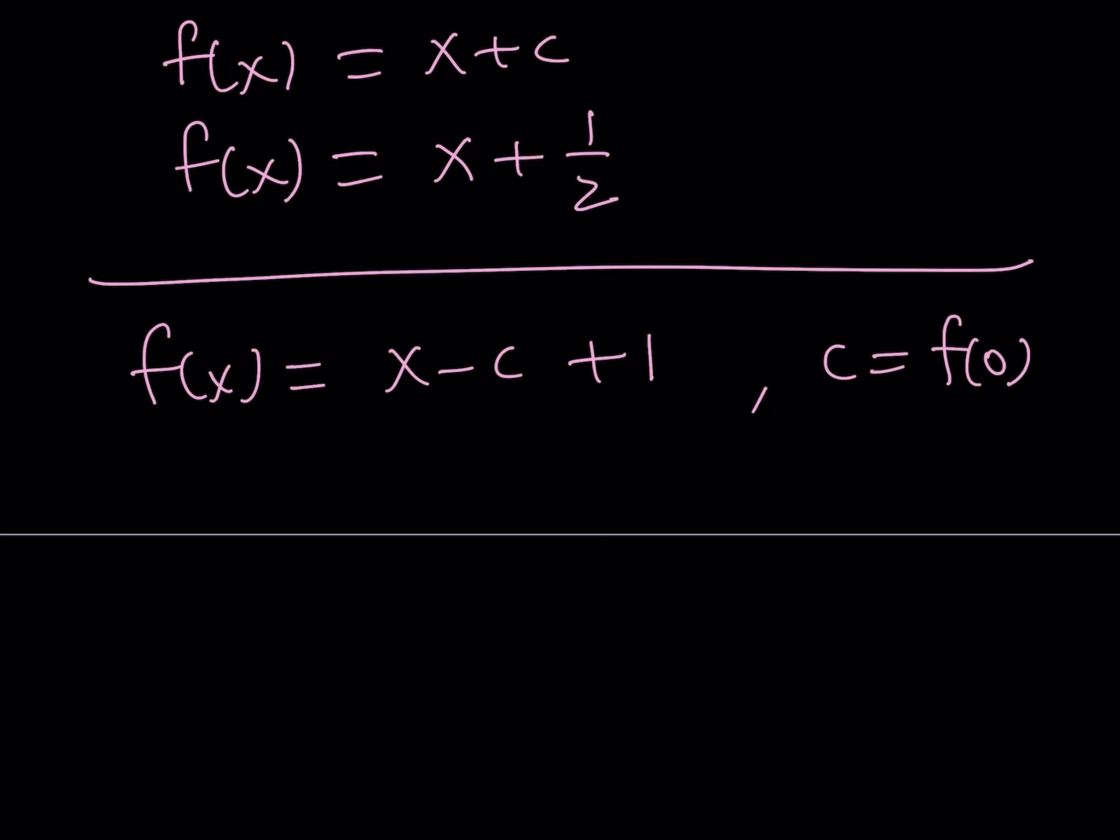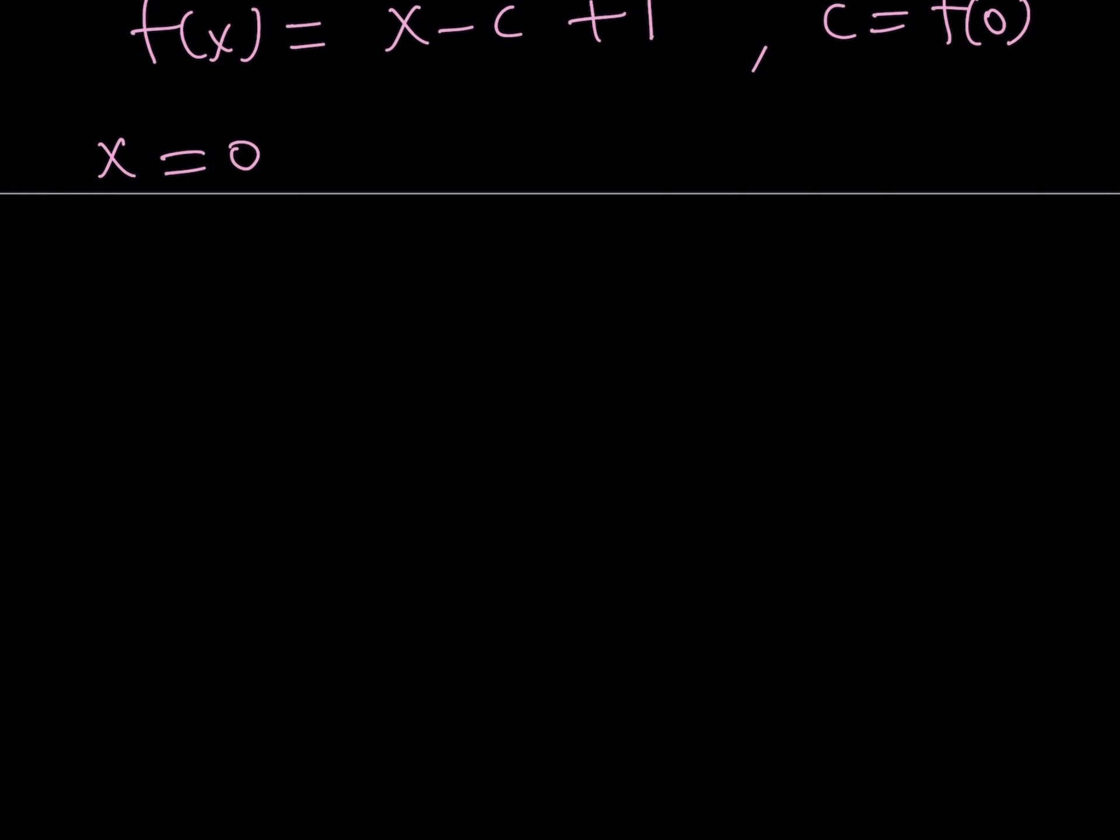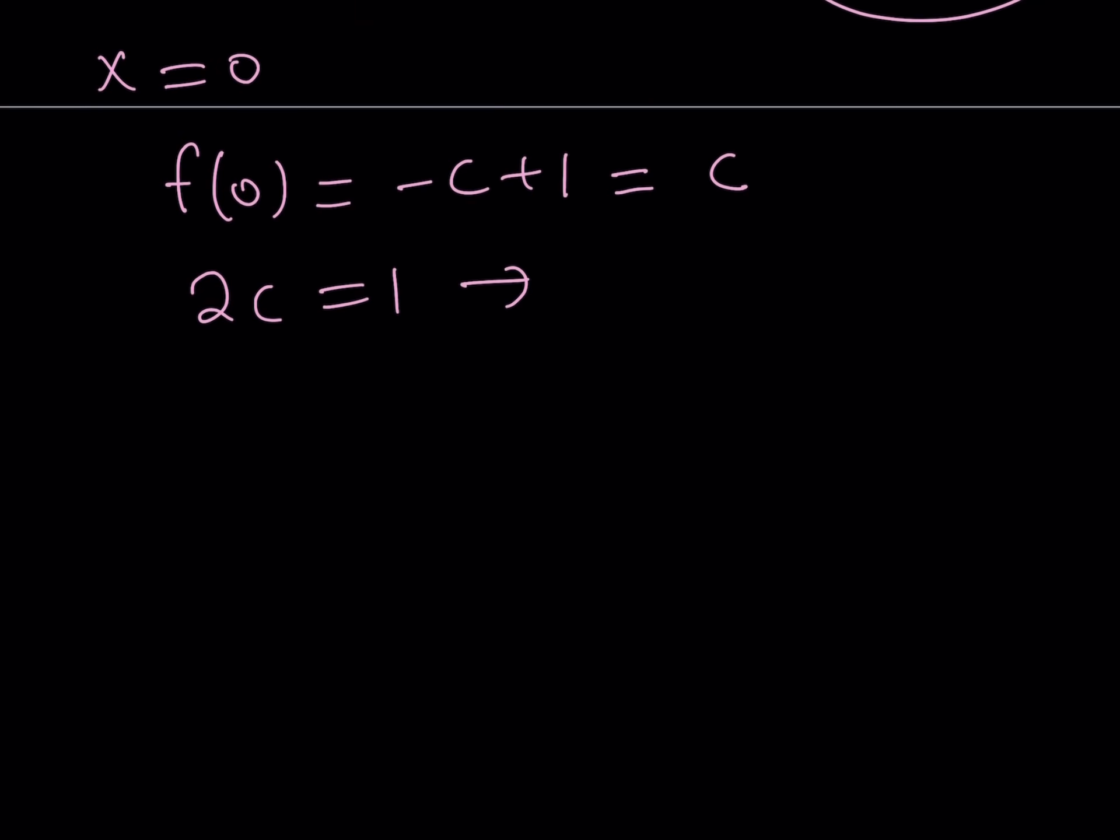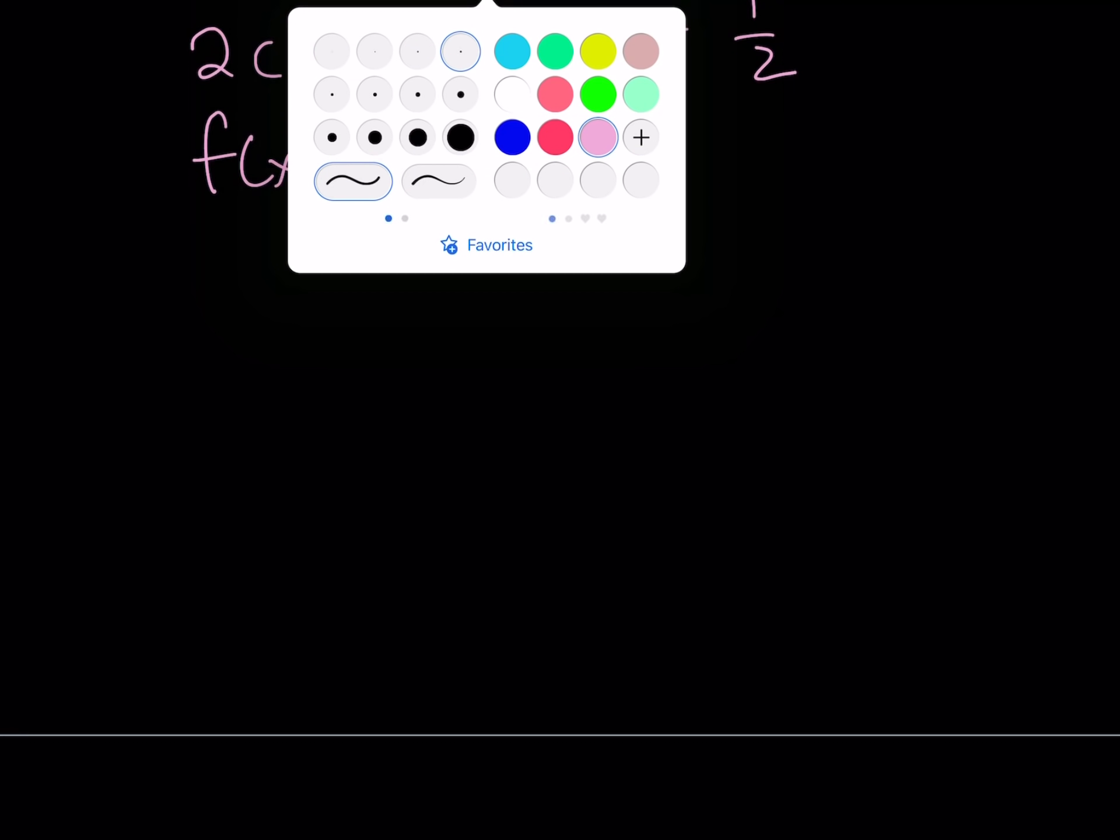So why don't we just replace x with 0 on both sides of this equation because we have an expression for f of x. So let's go ahead and replace x with 0. That's going to give us f of 0 equals negative c plus 1. But f of 0 is equal to c from here. Therefore, I can replace f of 0 with c. That gives us the following equation. And if we add c to both sides, we get 2c equals 1. From here, we get c equals 1 half. Therefore, f of x one more time becomes x plus 1 half. And this brings us to the end of this video.